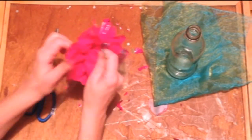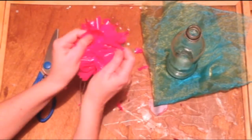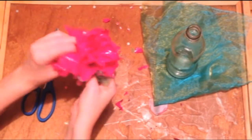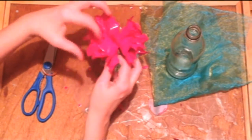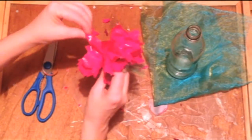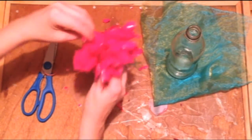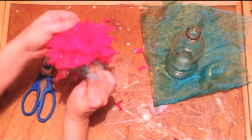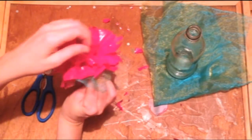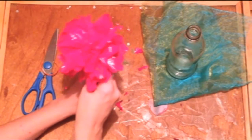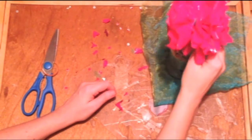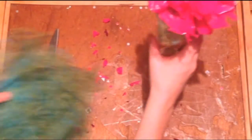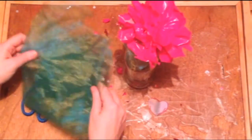Then just play around with your flower, so it gets how you want it. After you've done that, and I want it so the green material is at the bottom of my flower. Then just pop the flower into the bottle, so that's the flower.